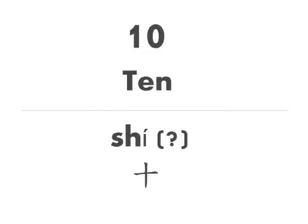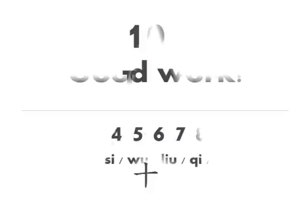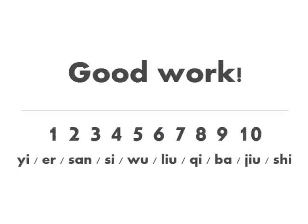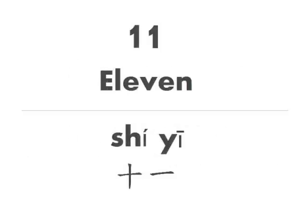And the number 10: shi. This is a rising tone. Try to imagine you're asking the question 'what?' but with the word shi. Again, shi. Good work. Now that we know how to count from 1 to 10, we also have all the vocabulary we need to count all the way to 99. All you have to do is combine numbers together from here on. The best way to learn this is through demonstration.